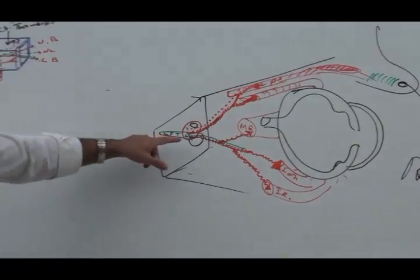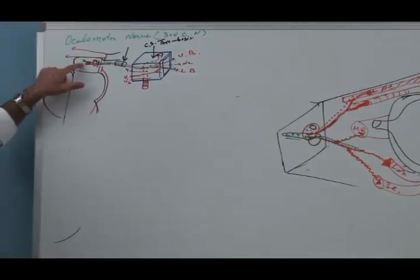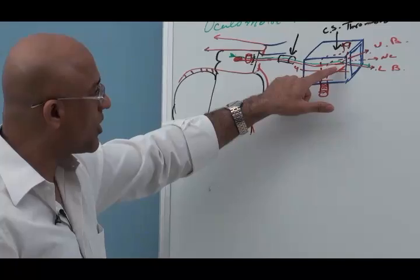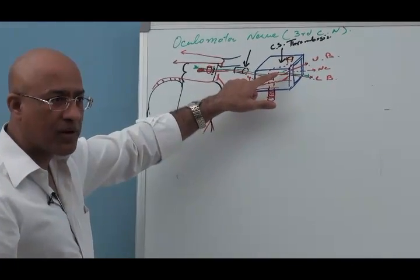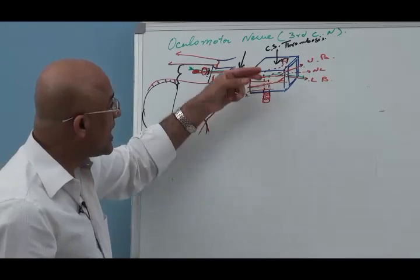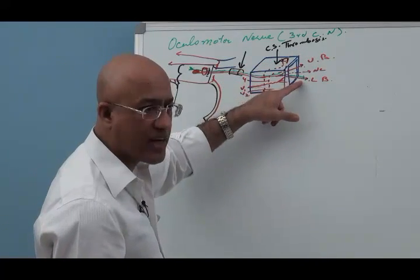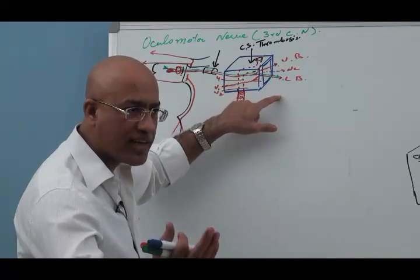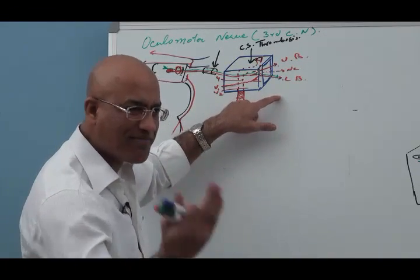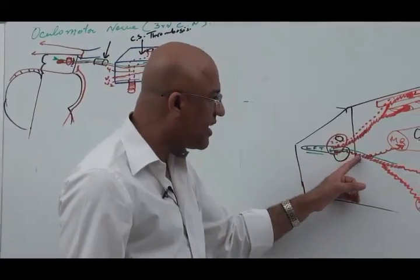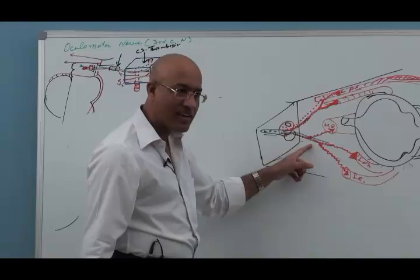Now here you need to understand. The parasympathetic fibers started with the main oculomotor nerve. They went along with that in the cavernous sinus with parasympathetic and somatomotor fibers. Sympathetic fibers also came. Then it divided into upper branch and lower branch. Upper branch has somatomotor fibers with sympathetic fibers. Lower branch has somatomotor fibers with parasympathetic fibers.